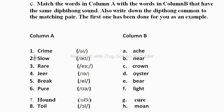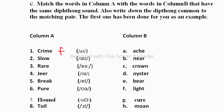The first pair is 'crime' and 'light' — both have the /aɪ/ sound, so they match. Next, 'slow' — the /əʊ/ sound is here. Slow is matching with 'moan', so we have the /əʊ/ sound. Then 'rare' — rare is matching with 'bear', and we have the /eə/ sound.